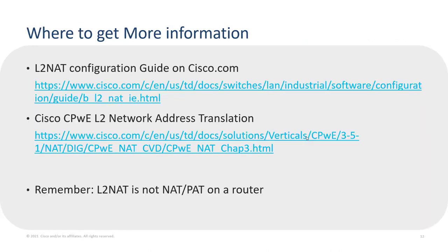I hope that's helpful. There's more information beyond this video — the Cisco configuration guide is good for more on Layer 2 NAT translation, and the CPWE (Connected Plantwide Ethernet) design guide has a chapter on Layer 2 network address translation. Finally, remember: Layer 2 NAT does not work through Layer 3. It switches the packets — it's not routing. Thanks for watching.